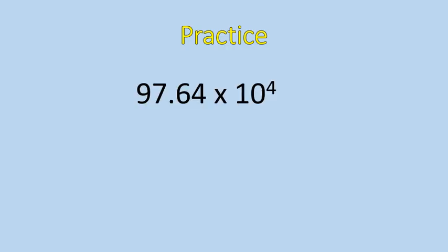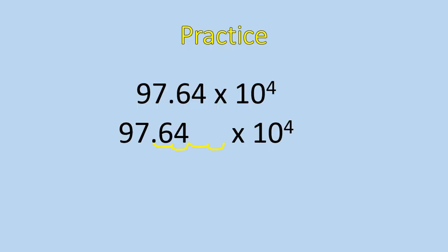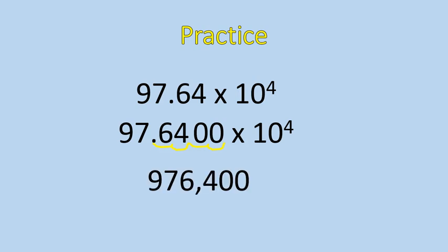So let's go ahead and practice. I have 97.64 times 10 to the power of 4. If I'm given this type of question, I am going to give myself a little bit of space, shift the decimal four places to the right. Now, after I get past the 4, I'm going to have to add in some place fillers, some zeros, just to fill up the space there. And that gives me the answer of 976,400.